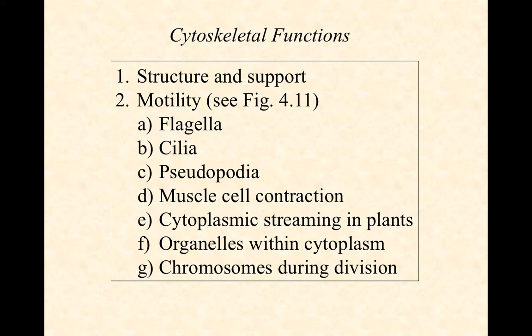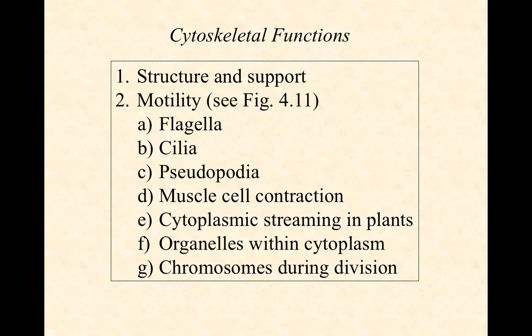The cytoskeleton is also involved in motility — a fancy word for movement. Either the whole cell moves, or organelles and other structures within the cell move around without leaving it. Flagella, cilia, and pseudopodia are examples where the entire cell moves somewhere. A flagellum is a large whip-like tail. Cilia are small hair-like structures found on a variety of cell types that can be coordinated to wave in movement — think paramecium. Pseudopodia, classic in the amoeba, are cytoplasmic extensions that allow a cell to crawl by pushing portions of itself forward like a little foot.